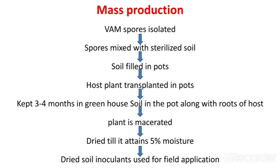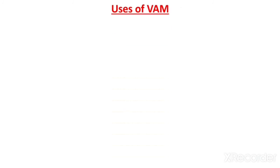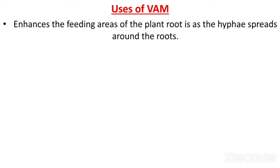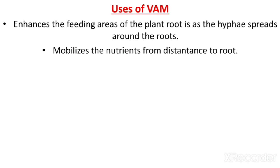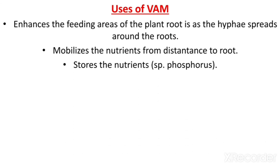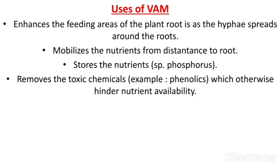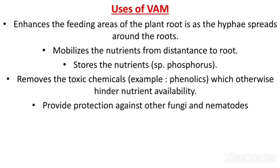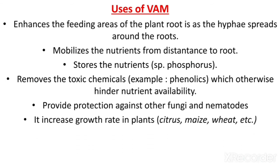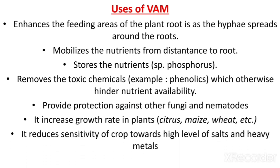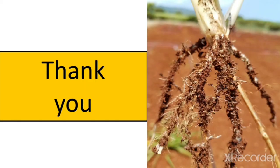The uses of VAM include: it enhances the feeding area of plant roots as hyphae spread around the roots; it mobilizes nutrients from a distance to the root; it stores nutrients such as phosphorus; it removes toxic chemicals like phenolics which hinder nutrient availability; it provides protection against other fungi and nematodes; it increases growth rate in plants such as citrus, maize, and wheat; and it reduces sensitivity of crops to high levels of salts and metals.